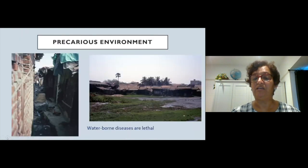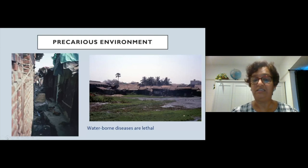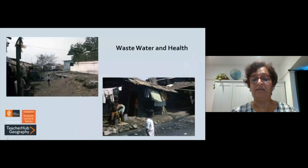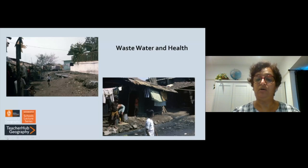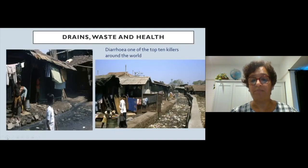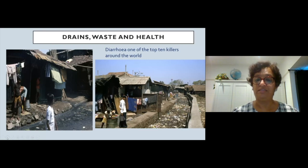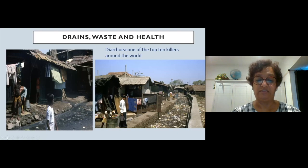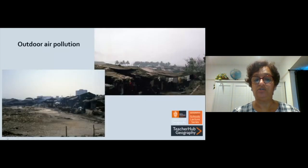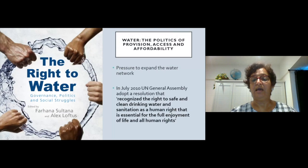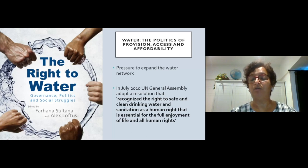Slums exist in a precarious, densely populated environment. There are waterborne diseases with health impacts, lack of waste water disposal affecting everyday living conditions, and diarrhea is one of the top ten killers around the world. Drains are not emptied, there is no waste disposal, and outdoor air pollution is encountered. Water is very limited — people get water for only a couple of hours a day, and then it has to be purchased, creating a politics of provision.